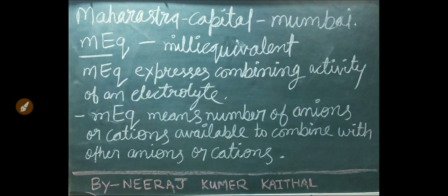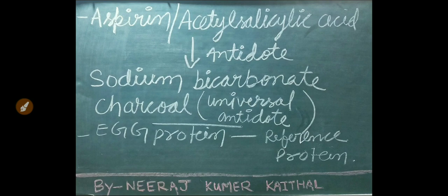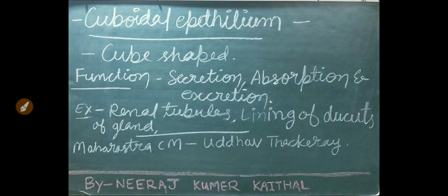mEq (milliequivalent) expresses the combining activity of an electrolyte — it means the number of anions or cations available to combine with other ions. Aspirin, also known as acetylsalicylic acid, has sodium bicarbonate or charcoal as its antidote. Charcoal is also known as the universal antidote. Egg is known as reference protein. Cuboidal epithelium consists of cube-shaped structures; functions include secretion, absorption, and excretion. Examples include renal tubules and lining of ducts of glands.